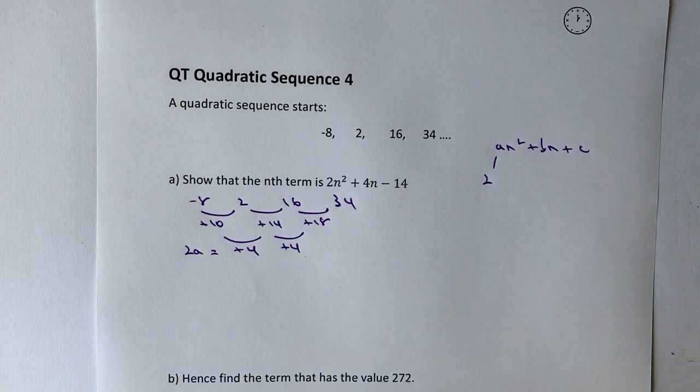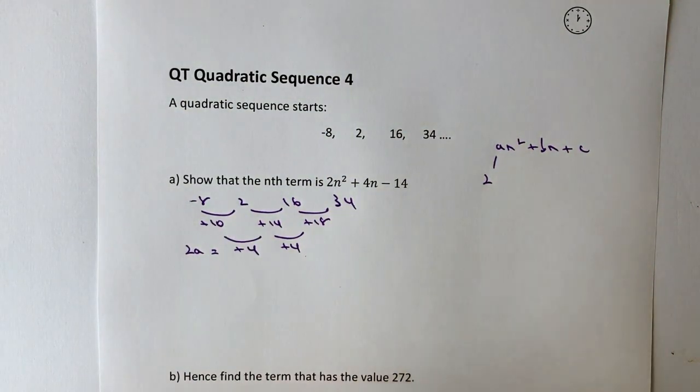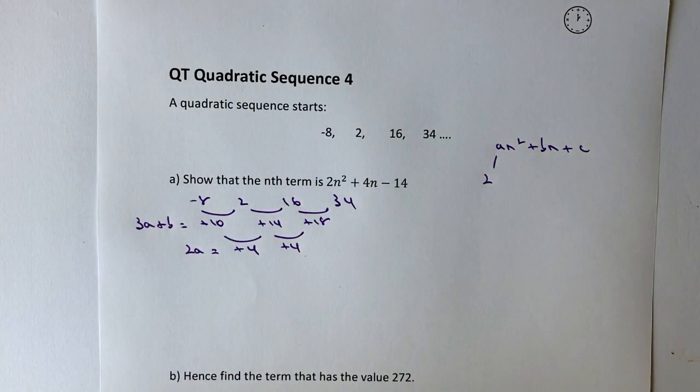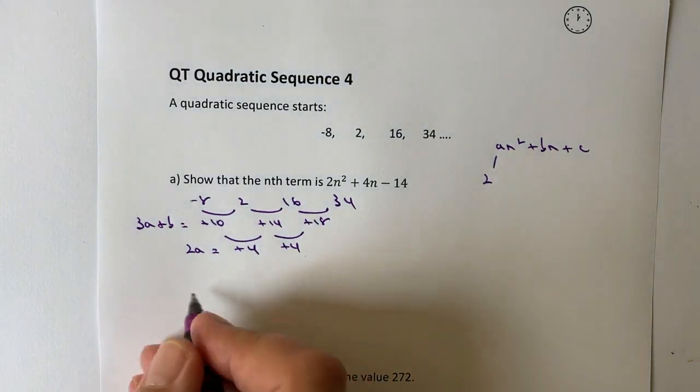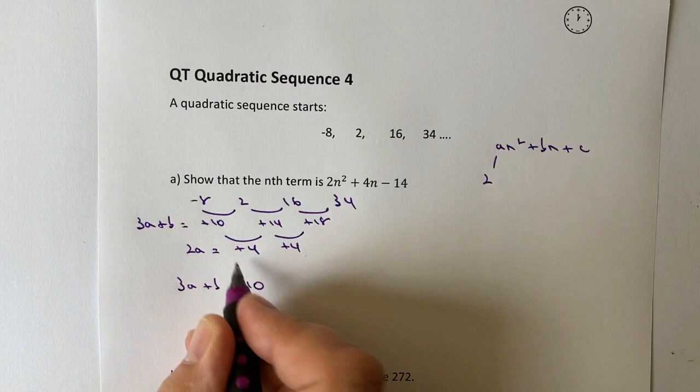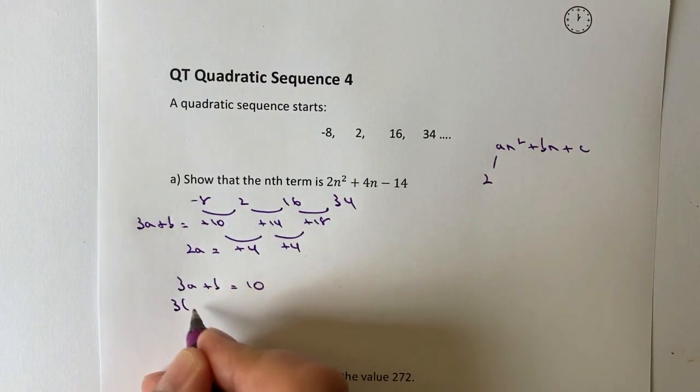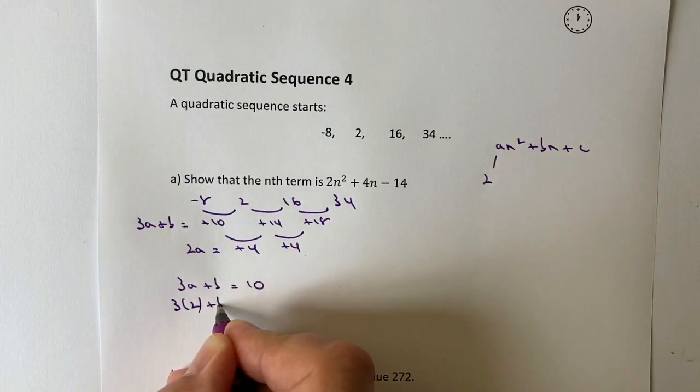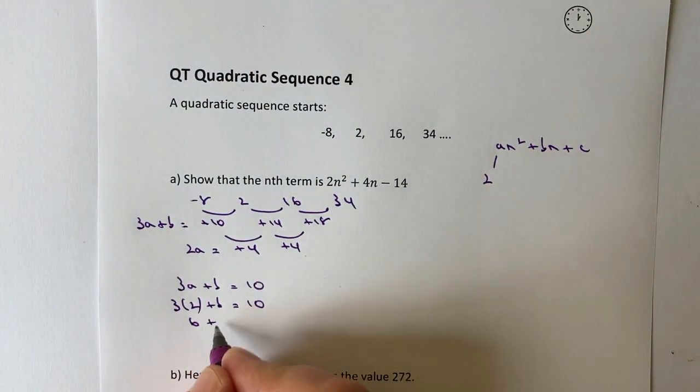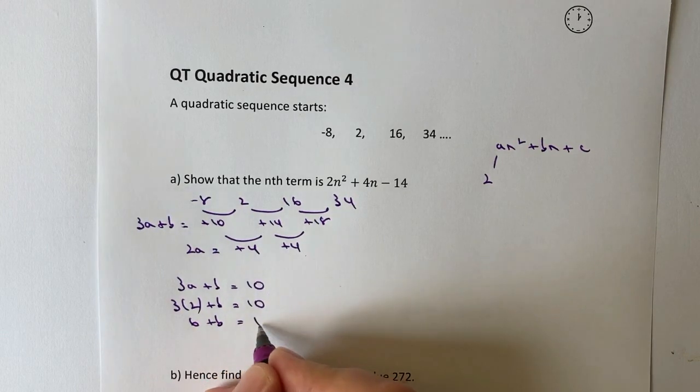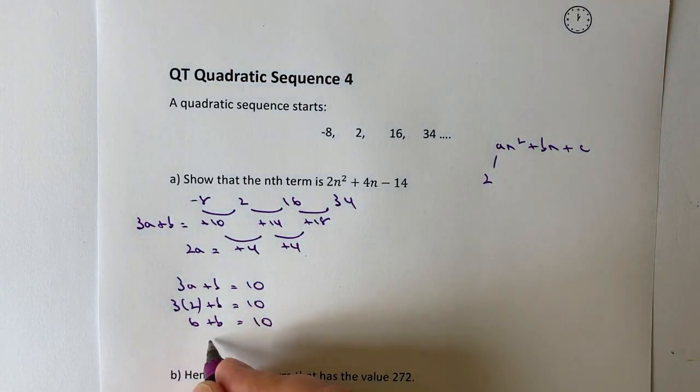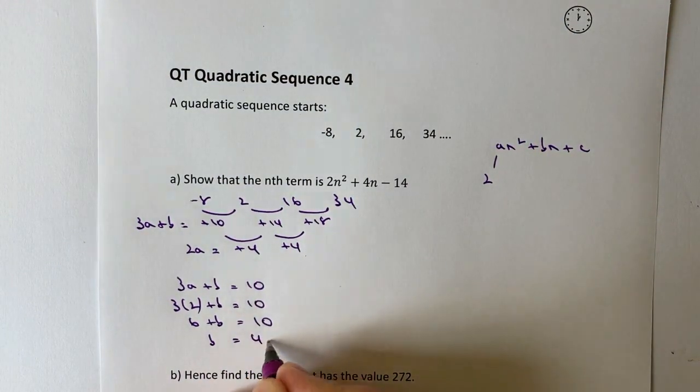Let's have a look at the next one. So I've got plus 10, and the formula is 3a plus b equals plus 10. I've got 3a plus b equals 10. So I know that a is 2, so I can say 3 times 2 plus b equals 10. So that's going to be 6 plus b equals 10. If I minus 6 from both sides, I'm going to get in this particular case that b equals 4.